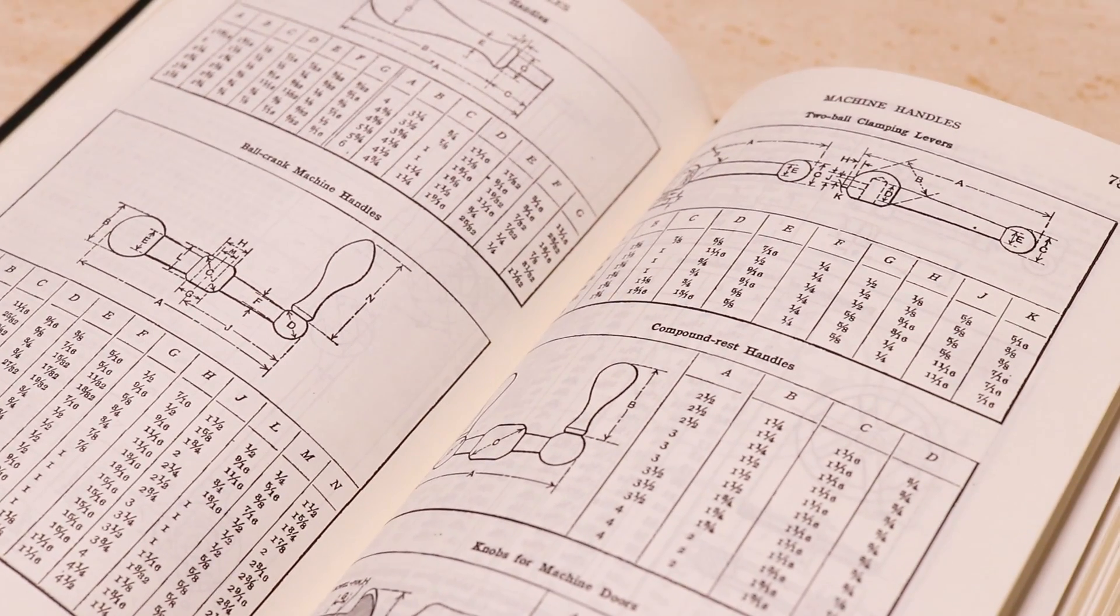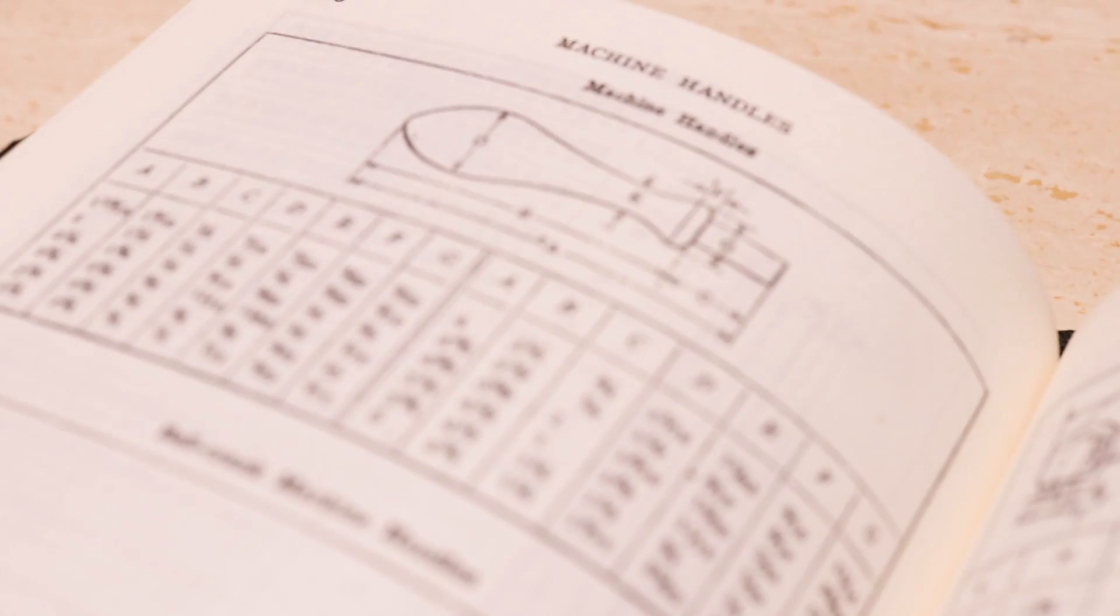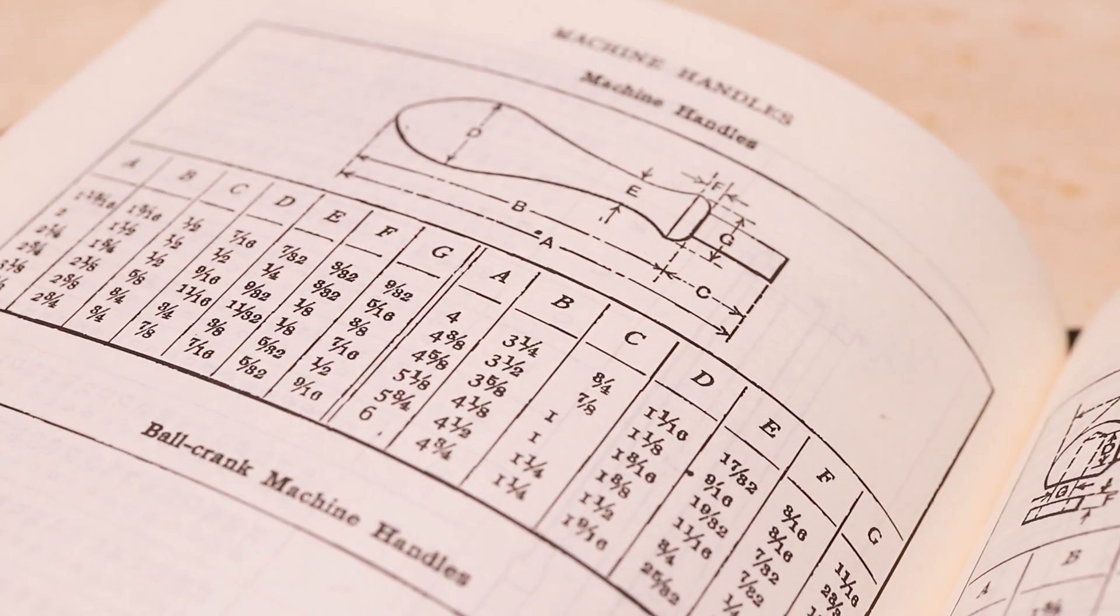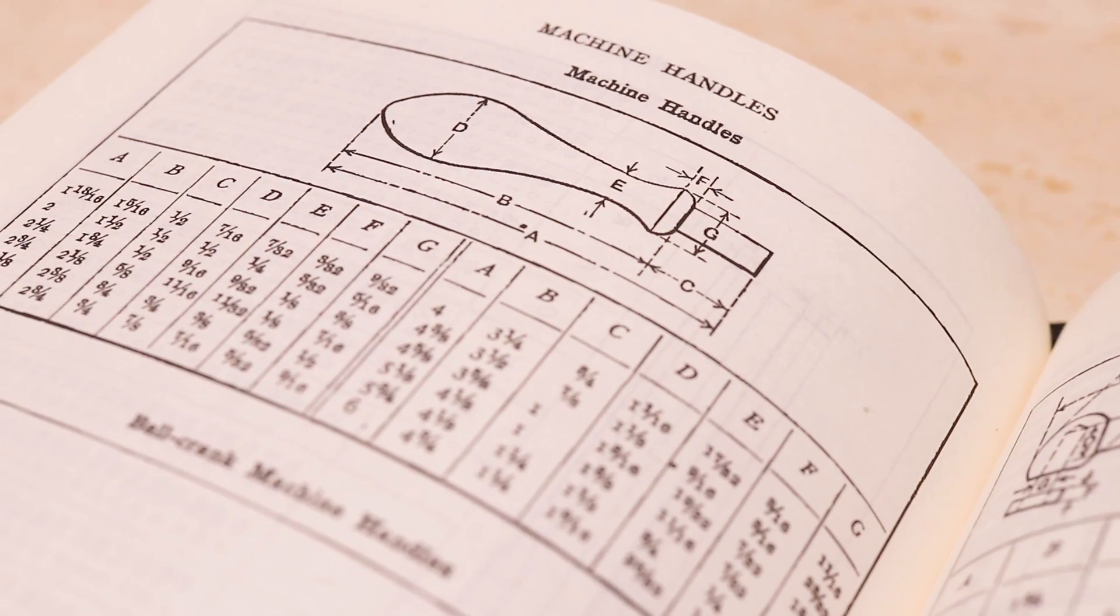Finally, we need a handle. The Machinery's Handbook has tables for machine handles, as do other books. However, I'll be reproducing the stock handle in aluminum.